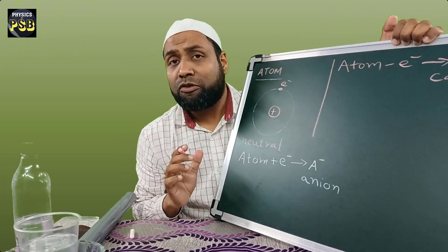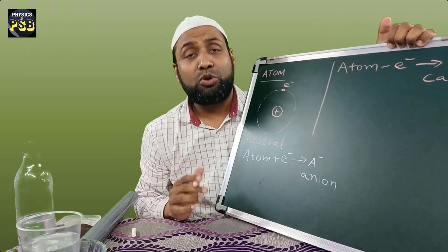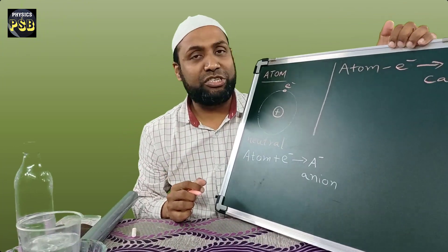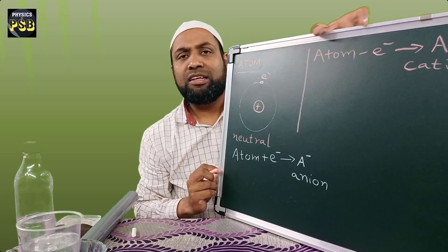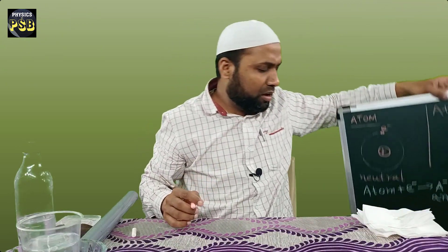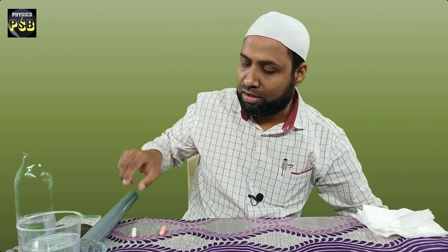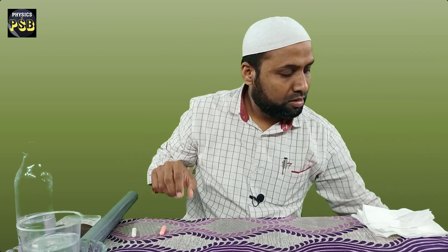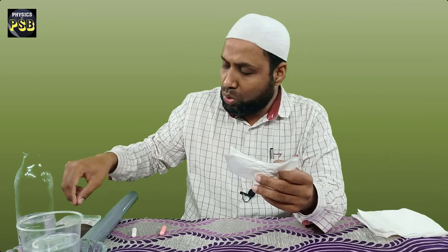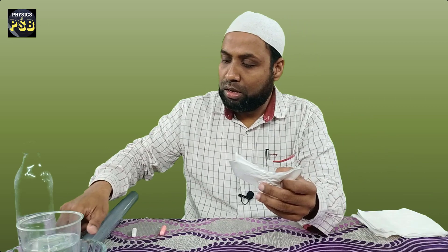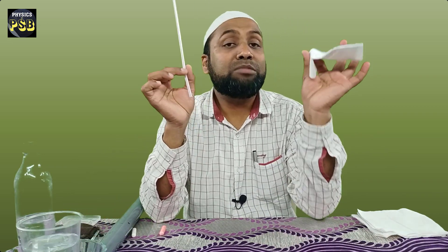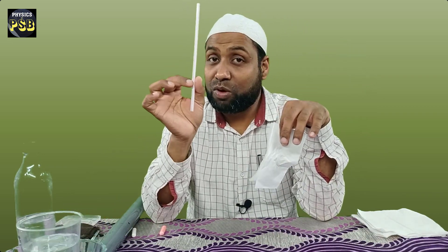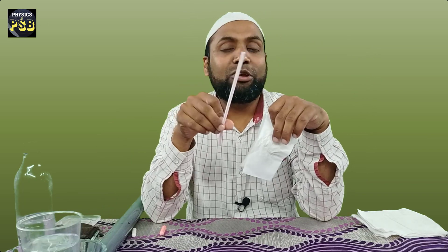This process of conversion of an atom into an ion is referred to as ionization. When I rub the straw with the tissue paper, the tissue paper gives out electrons to the straw, so the tissue paper becomes positively charged and the straw becomes negatively charged.